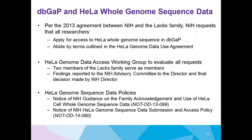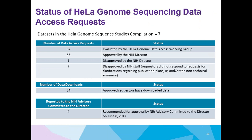DbGAP has also played a very important role in the HeLa genome sequencing policies. Per the agreement in 2013 between NIH and the Lacks family, NIH requests that all researchers apply for access to HeLa whole genome sequence data through DbGAP. We have a working group that operates a little differently than a standard data access committee because there are two members of the Lacks family on this committee. Because of that, we go through the advisory committee to the director, and the NIH director actually makes the final decision on these projects. There have been 67 requests to access the data, 55 of which have been approved by the NIH director.